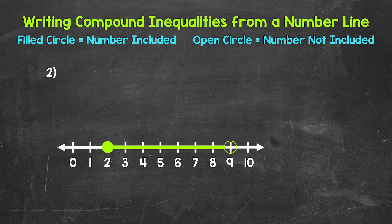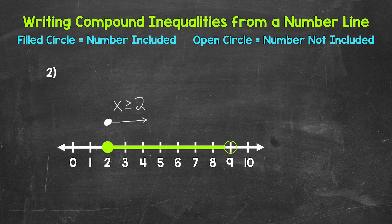We can see that we have a filled circle at two — two is included — then we have the numbers to the right, so greater than two. And then we have an open circle at nine, so nine is not included, and then we have the numbers to the left, so less than nine.